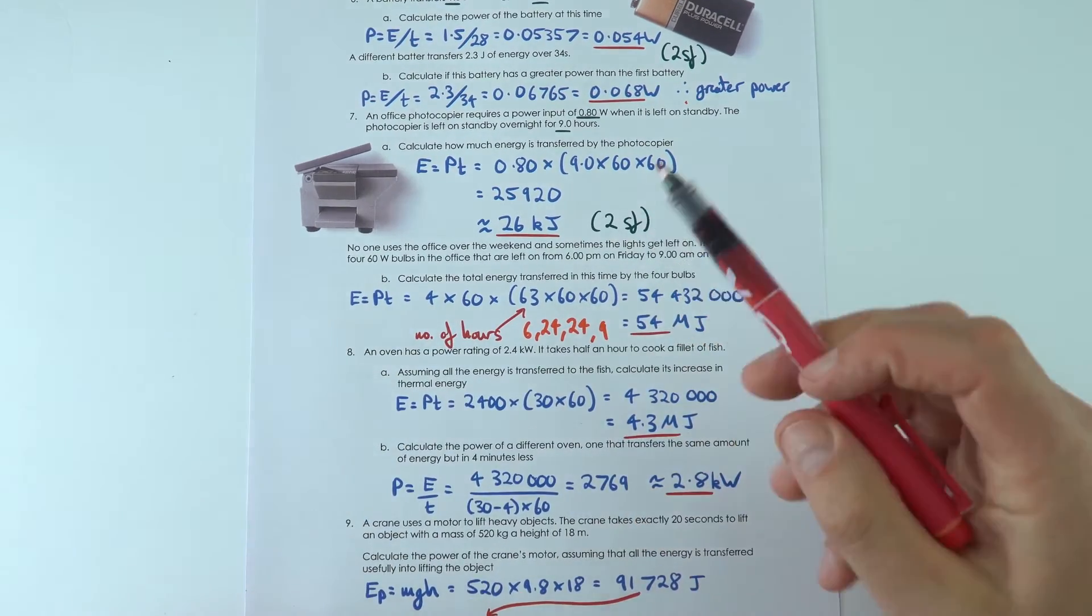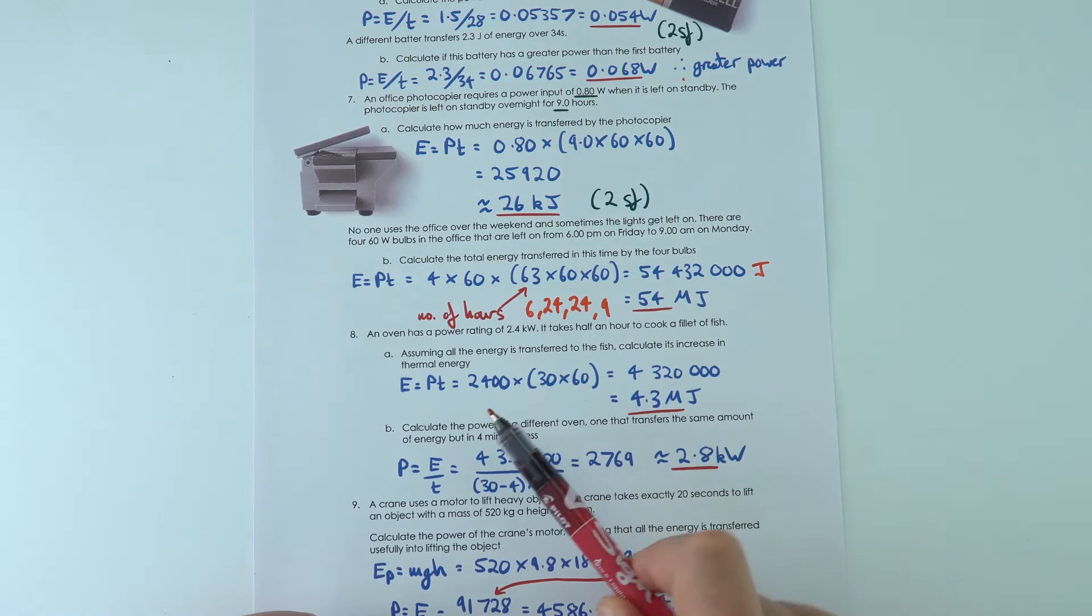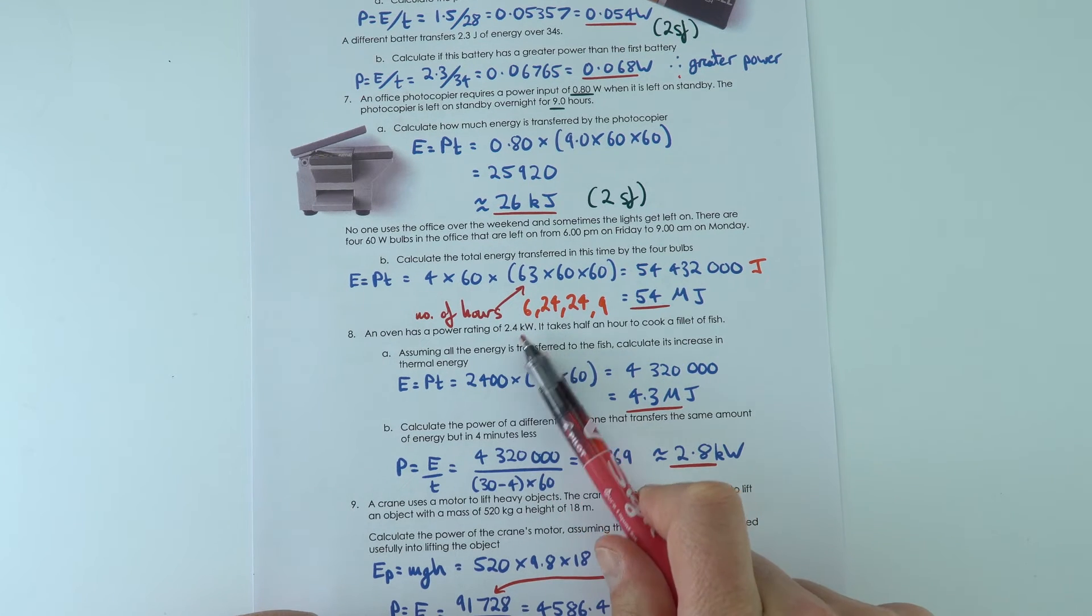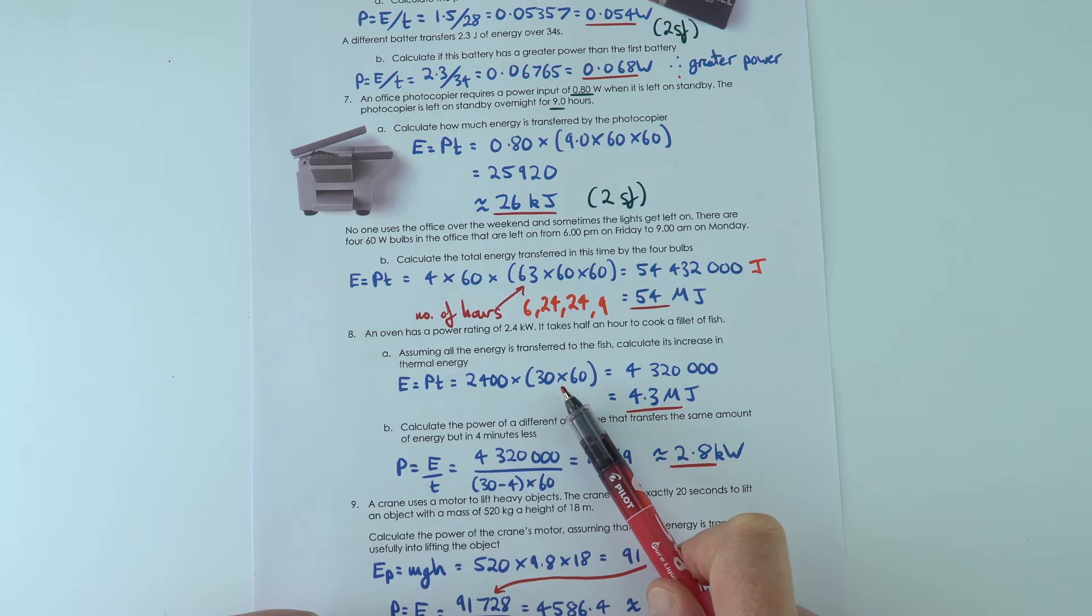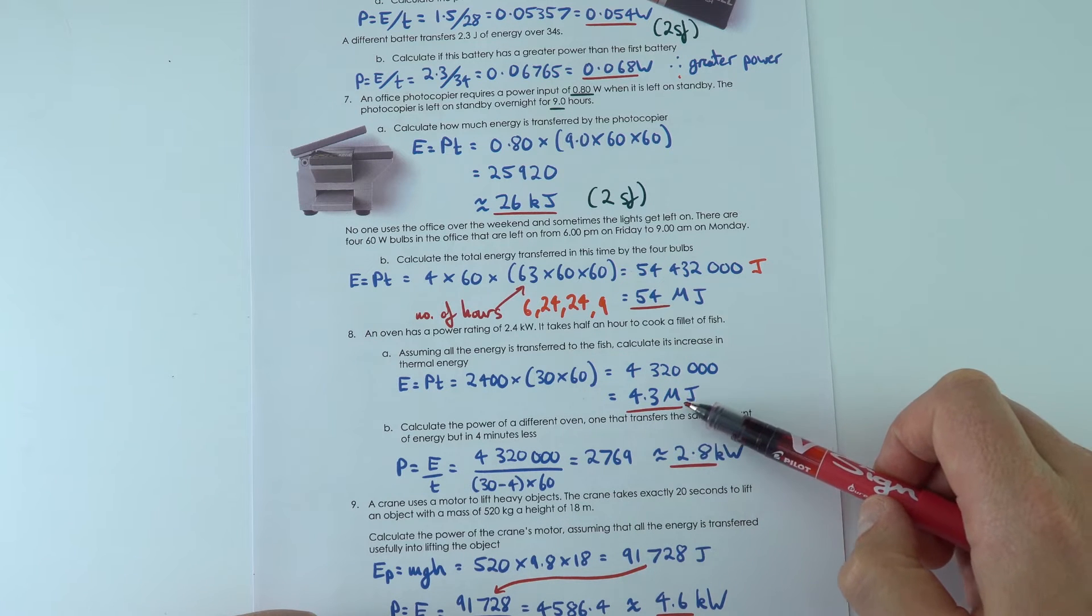And then the next one, we've got some energy, we've got the power given to us in the question, so converting from kilowatts to watts, converted from minutes into seconds to find that's 4.3 megajoules.